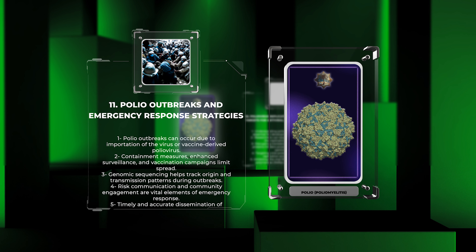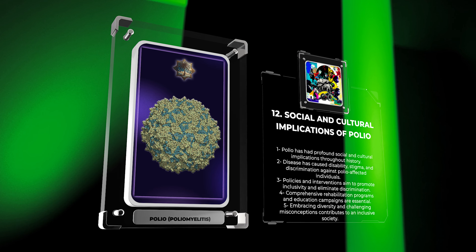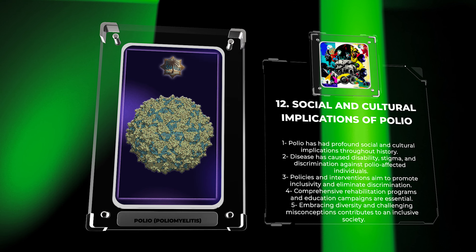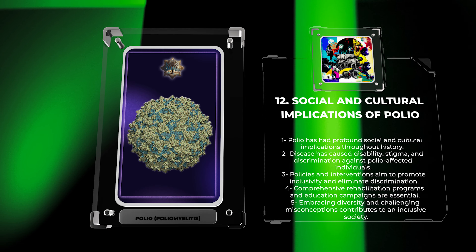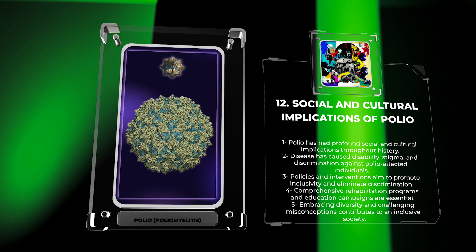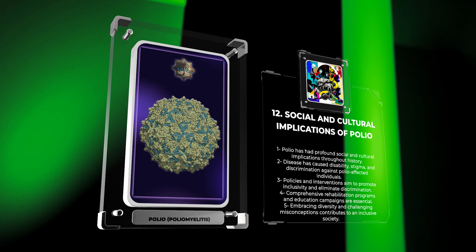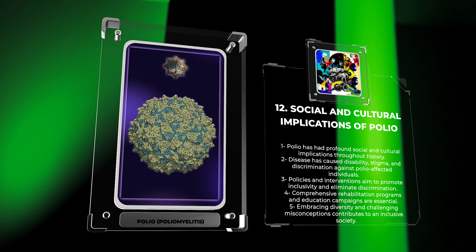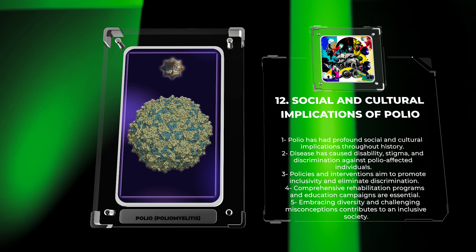Let us now delve into the social and cultural implications of polio. Polio, throughout history, has had profound social and cultural implications. The disease has caused significant disability, social stigma, and discrimination against individuals affected by polio. Historically, polio outbreaks have led to fear and panic within communities, affecting interpersonal relationships and community dynamics. As a result, affected individuals have often faced social isolation, limited educational opportunities, and restricted employment options.